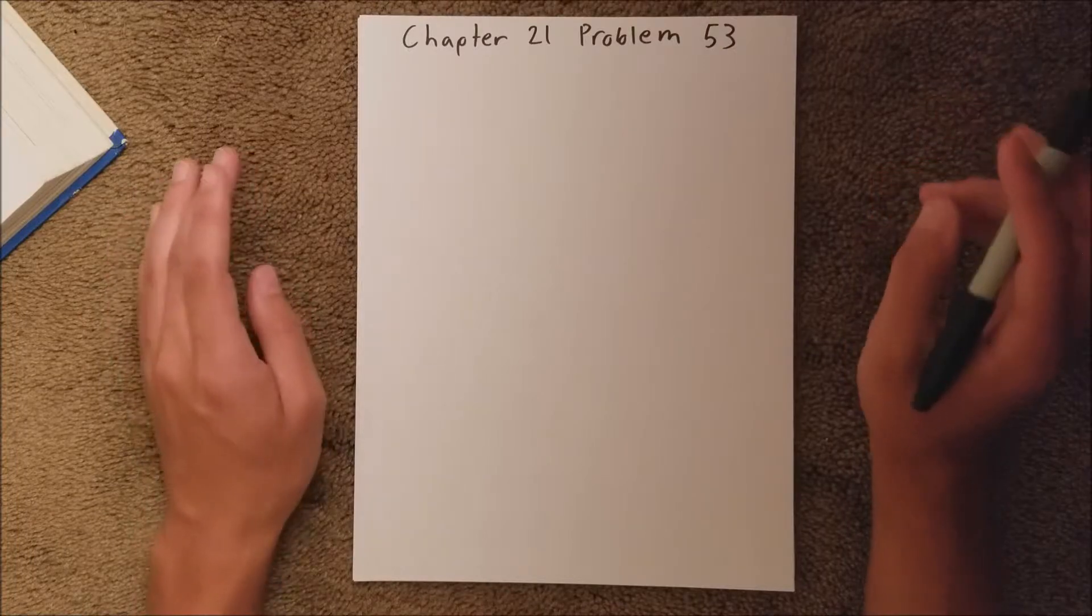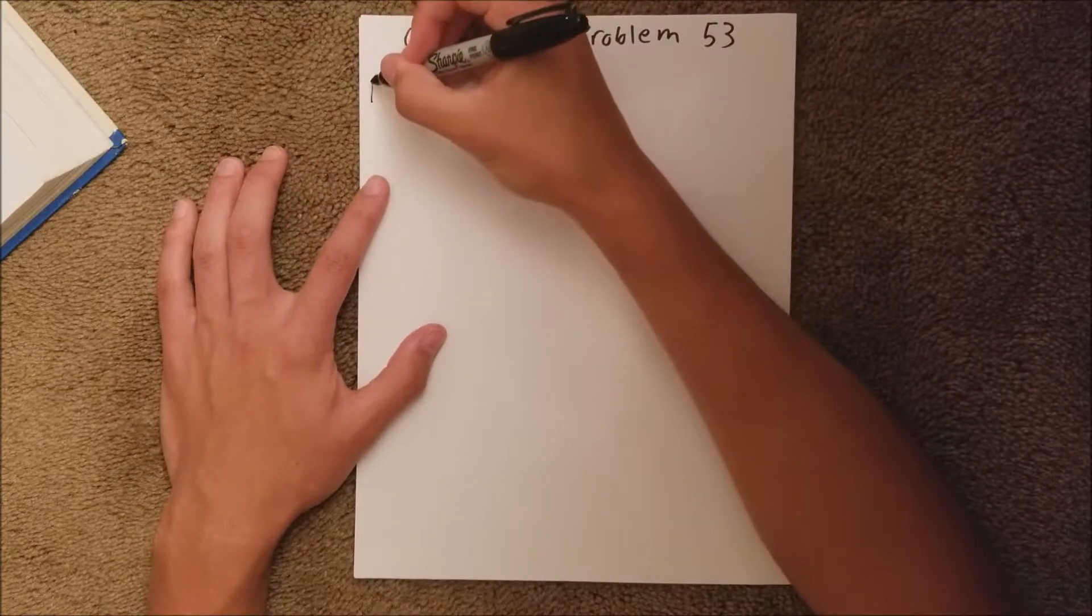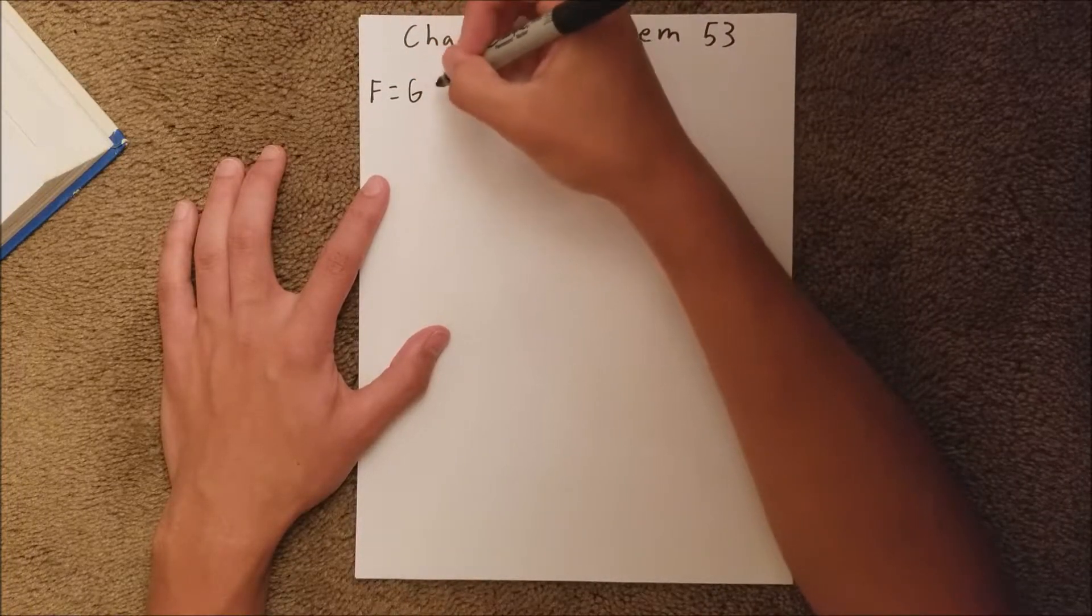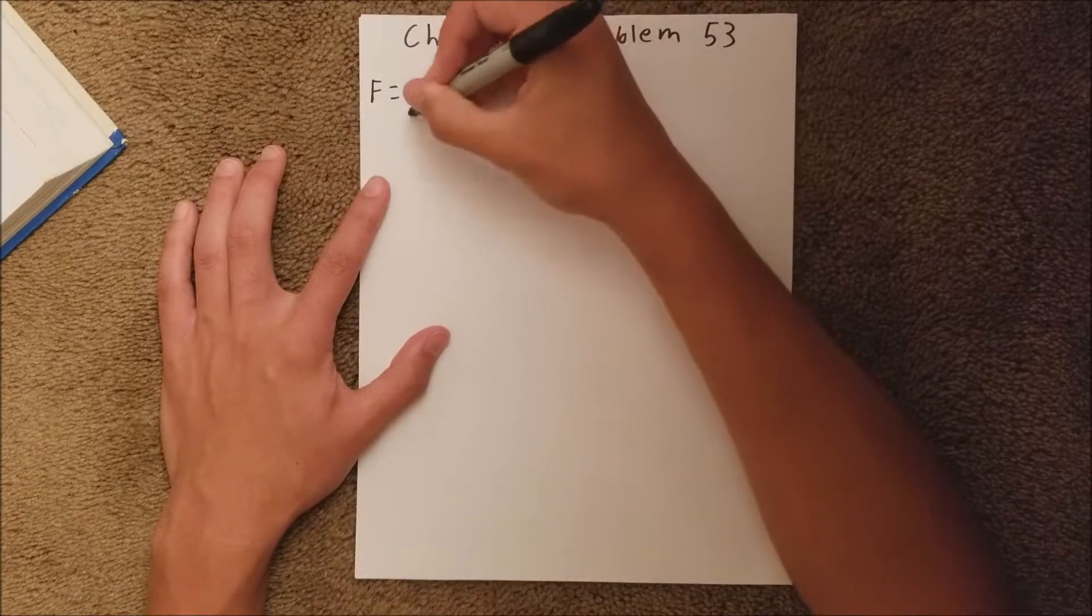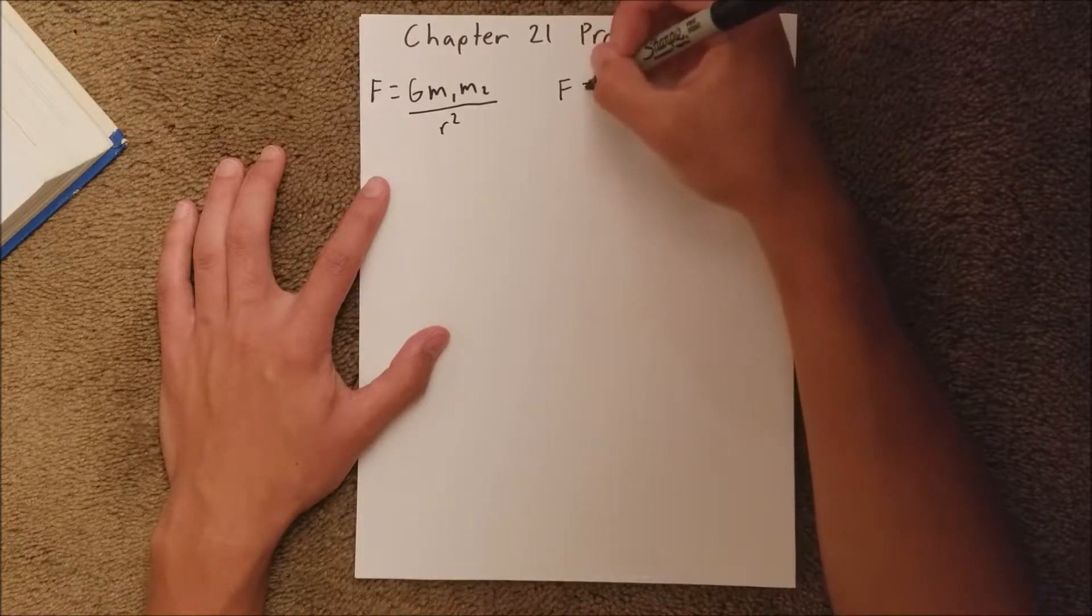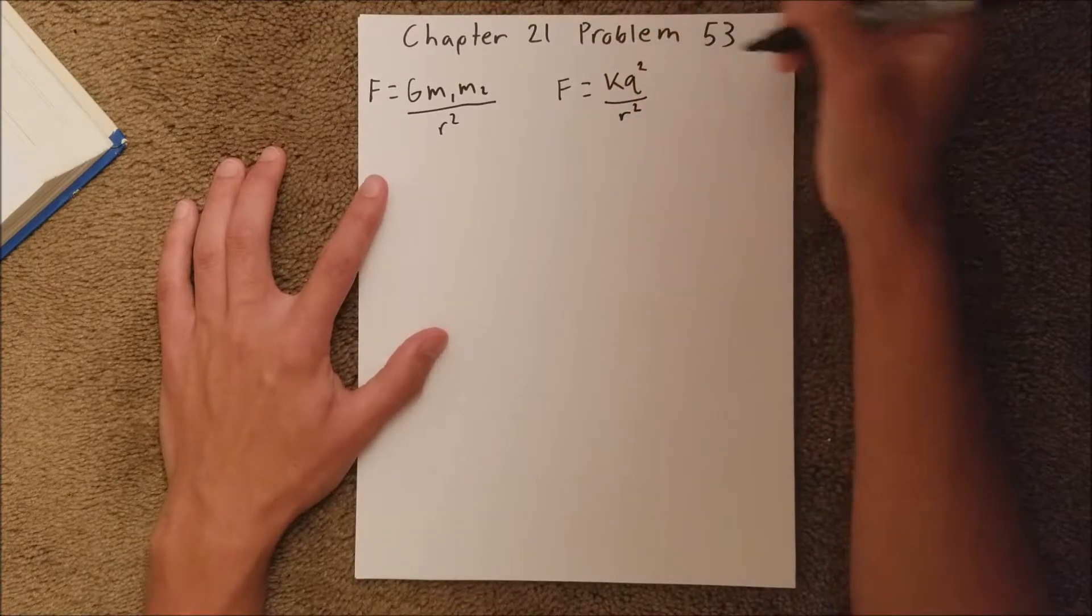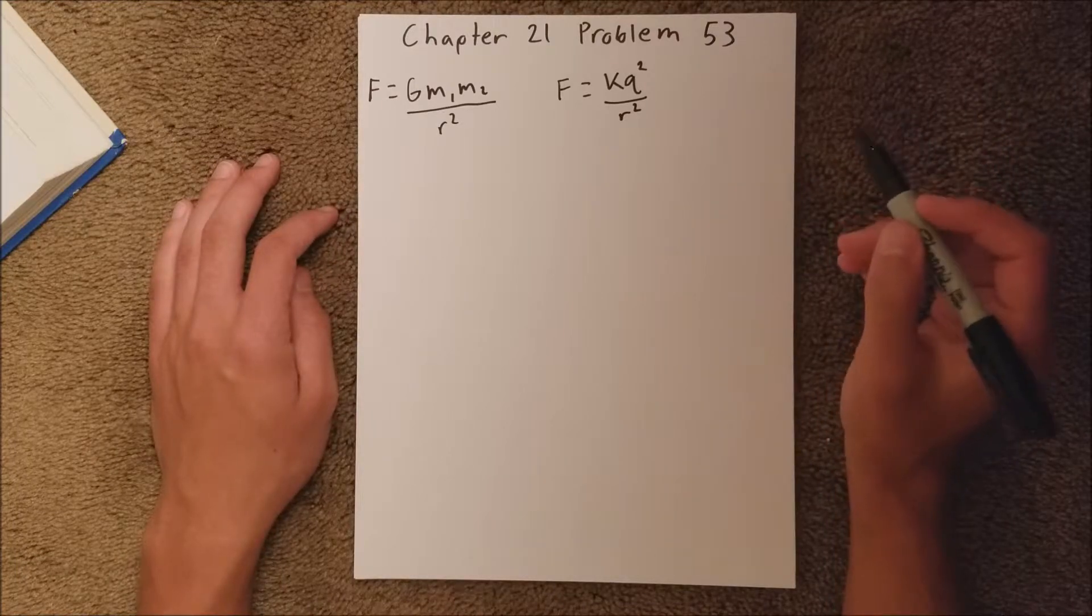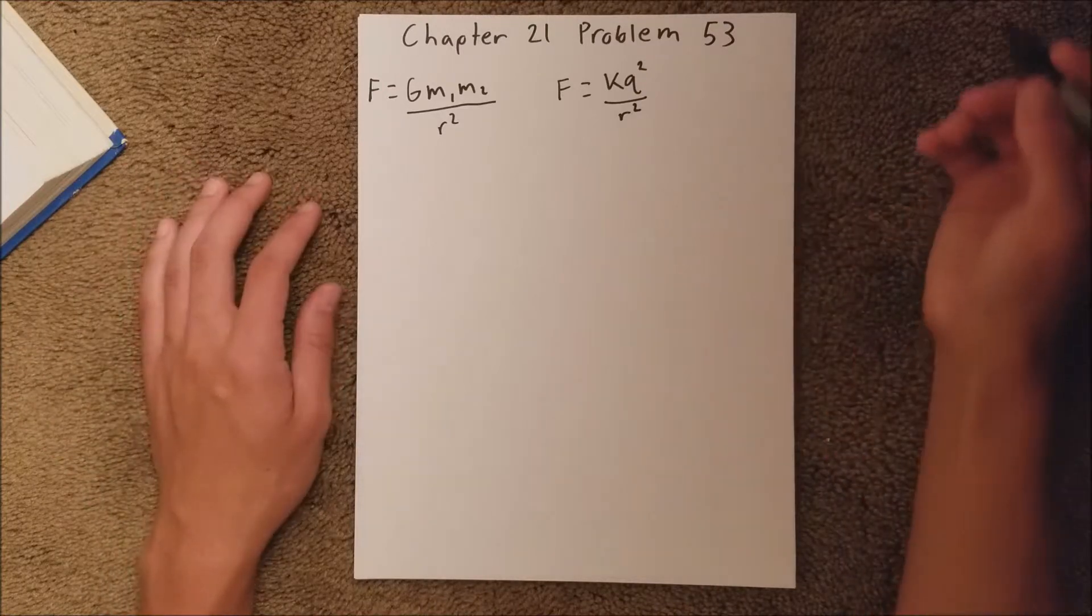So what we want to do is, we know we have two force equations. Force equals G, constant G for gravity, m1, m2, over r squared. And we have force equals kq squared over r squared, where k is your constant, 1 over 4 pi epsilon sub 0. And to neutralize these two forces, we have to set them equal to each other.